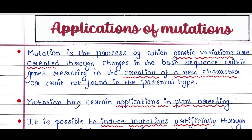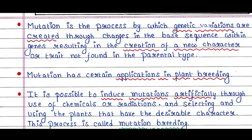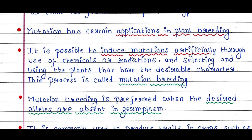Mutation has certain applications in plant breeding. It is possible to induce mutations artificially through the use of chemicals or radiations, selecting and using the plants that have the desirable character. This process is called mutation breeding.